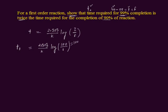Simplifying: 2.303 divided by k multiplied by log of 100, and log of 100 is equal to 2. Therefore t1 equals 2 multiplied by 2.303 divided by k. This is the time taken for the 99 percent completion of the reaction.